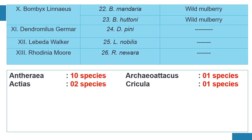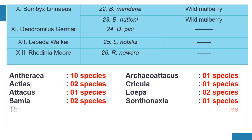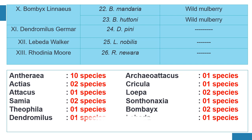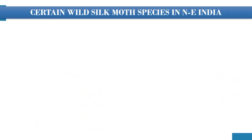Under genus Loepa we have Loepa sikkima and Loepa katinka; genus Samia — Samia ricini and Samia kenyiegi; genus Santonexia — Santonexia minas; genus Theophila — Theophila religiosa; under genus Bombyx — Bombyx mandarina and Bombyx hutoni; genus Dendromyla — Dendromyla spinae; genus Lebeda — Lebeda nobilis; genus Rhodinia — Rhodinia neura. In total we have 26 species of wild silk moth in the northeastern region of India.